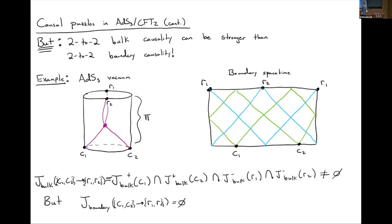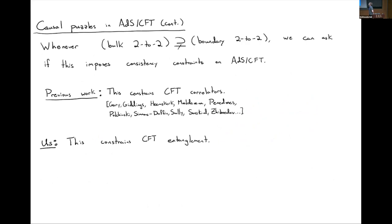There's a useful notation for talking about this phenomenon. I've written J_bulk of (c1, c2) to (r1, r2), meaning the set of all bulk points simultaneously in the future of c1 and c2 and the past of r1 and r2 — a two-to-two causal region. What I'm saying is that this two-to-two causal region is non-empty in the bulk but the analogous boundary region is empty. Whenever this happens, whenever bulk two-to-two causality is richer than boundary two-to-two causality, we can ask if this imposes consistency constraints on AdS/CFT.